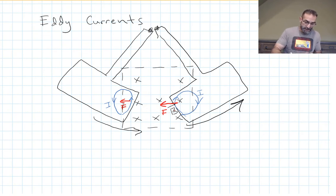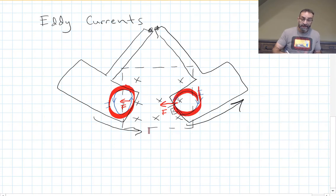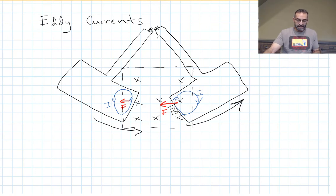And these currents, these small loops of current that are forming here, one over here, one over here, one over here, those are called eddy currents. And just to convince you, let's see this in a video demonstration.